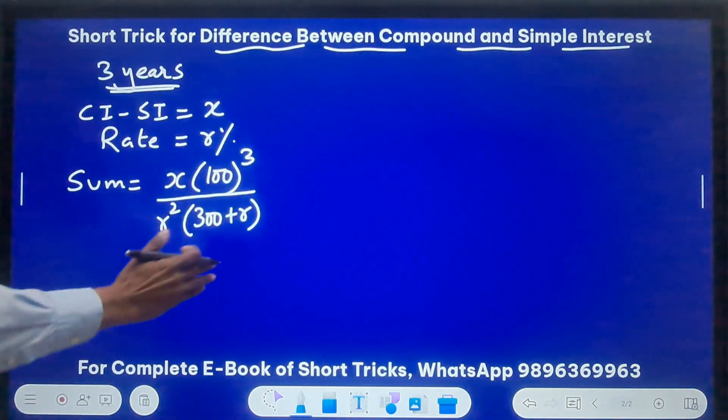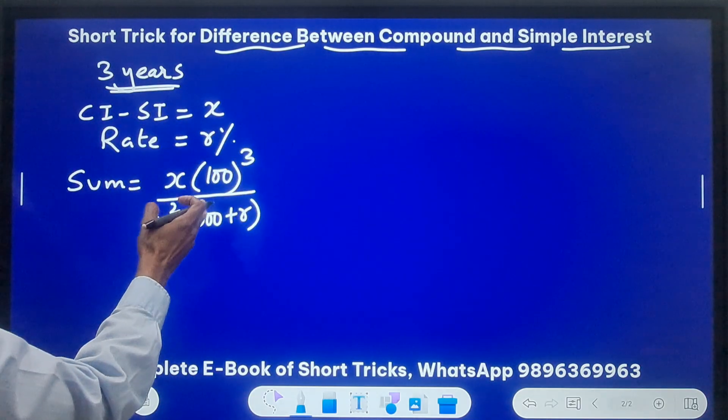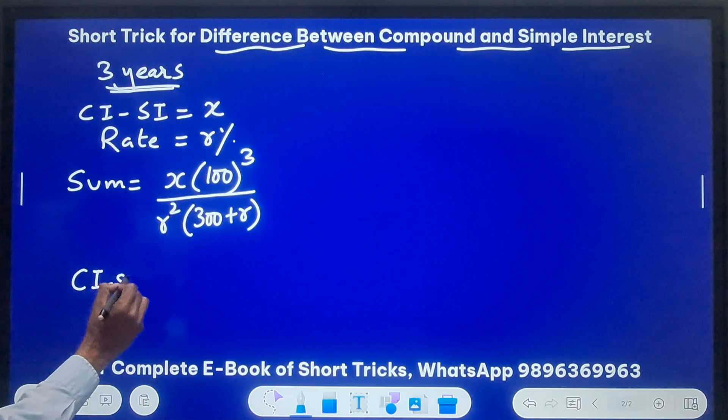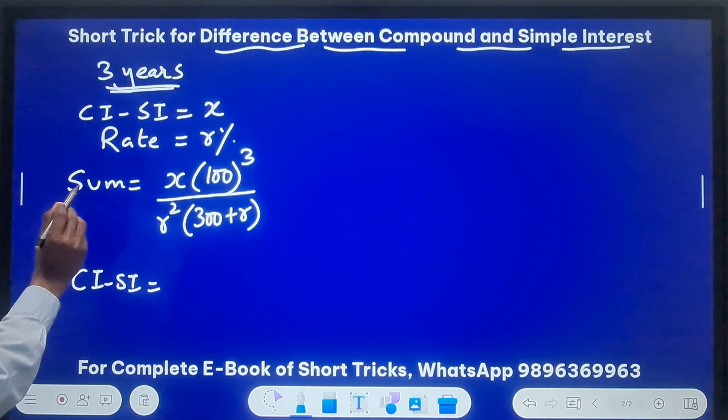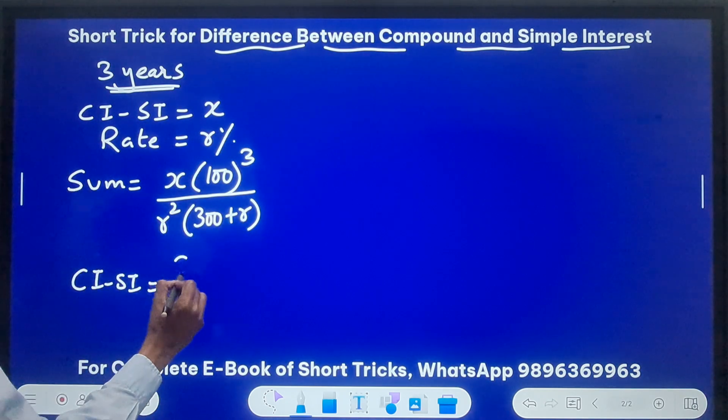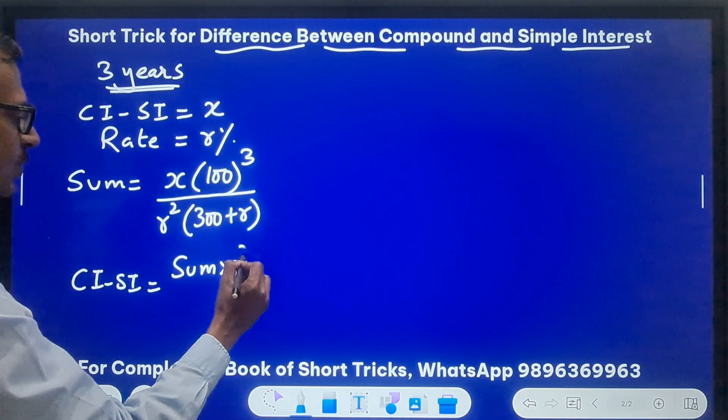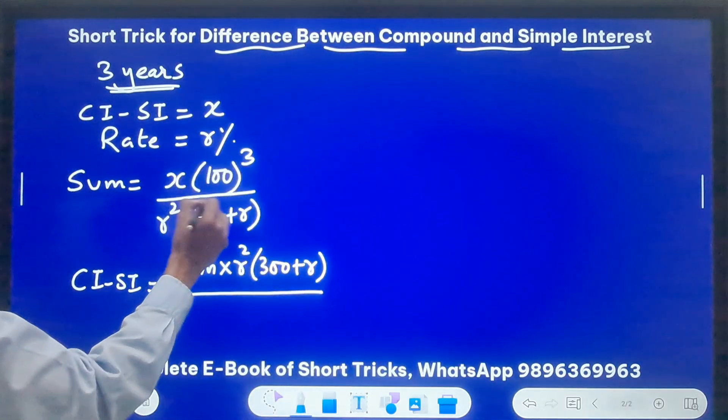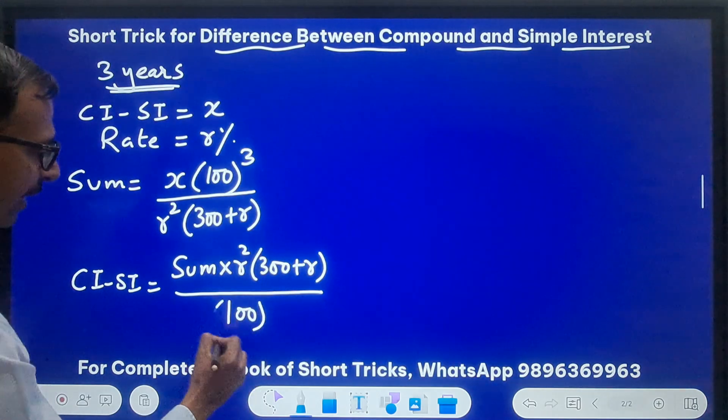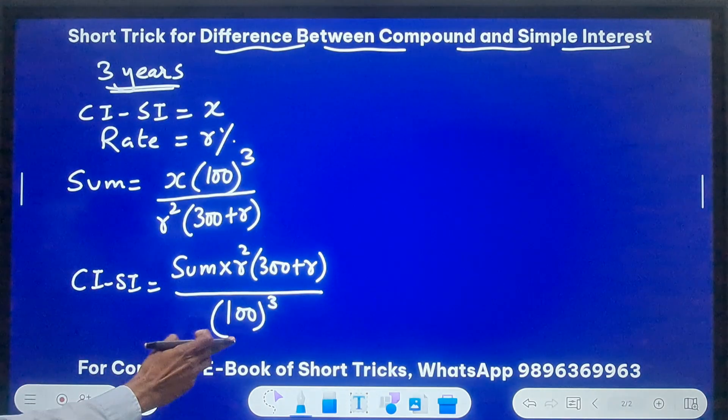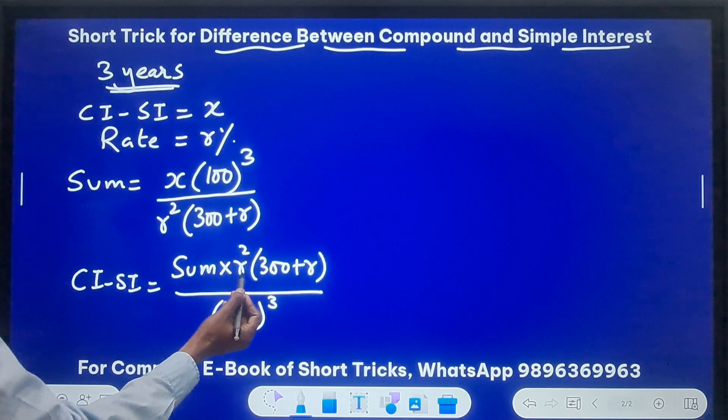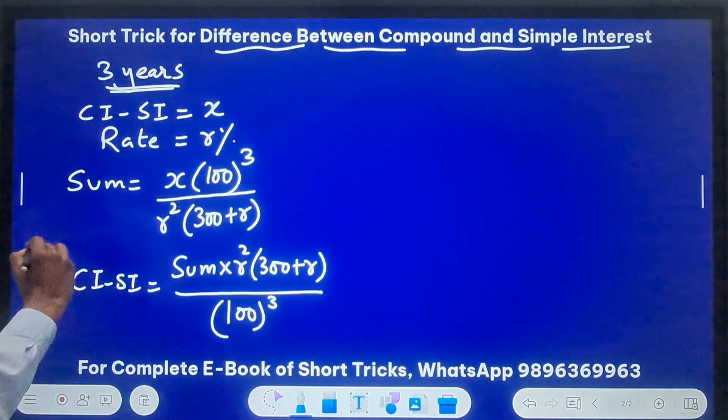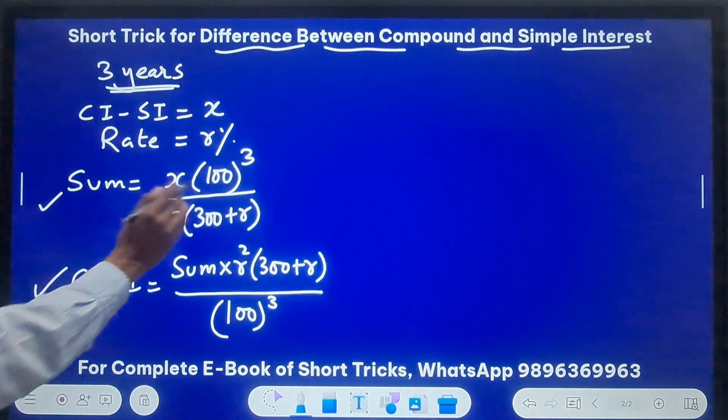Now this is the direct trick for finding the sum or the principal. Now from here we can deduce the formula that CI minus SI, that means X, will be sum, that is the principal, into R square into 300 plus R, and divide that by 100 cube, and you have the difference between CI and SI. So if you know the principal, you know the rate of interest, time is 3 years, you can find the difference between CI and SI directly using this formula, and principal using this formula.